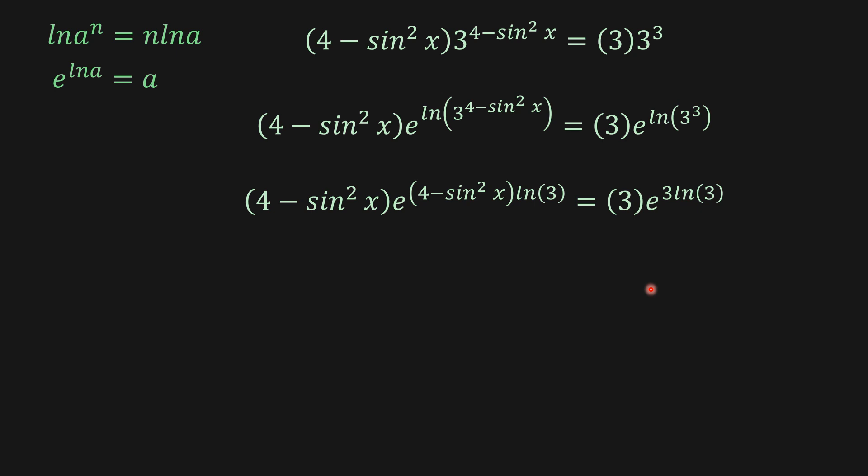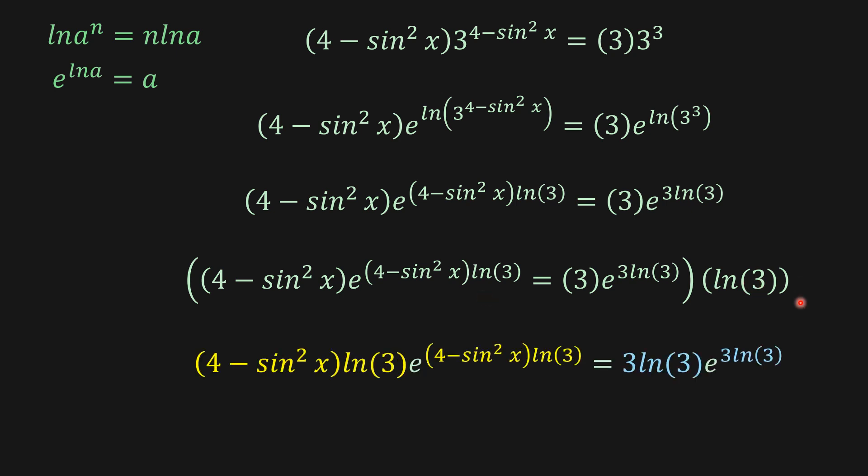Well, now what we're going to do is I'm going to multiply both sides of the equation by ln of 3, because here I see this one times ln of 3, and here I see 3, but I don't have the ln of 3. So we multiply both sides by ln of 3, and then from here we get this one.